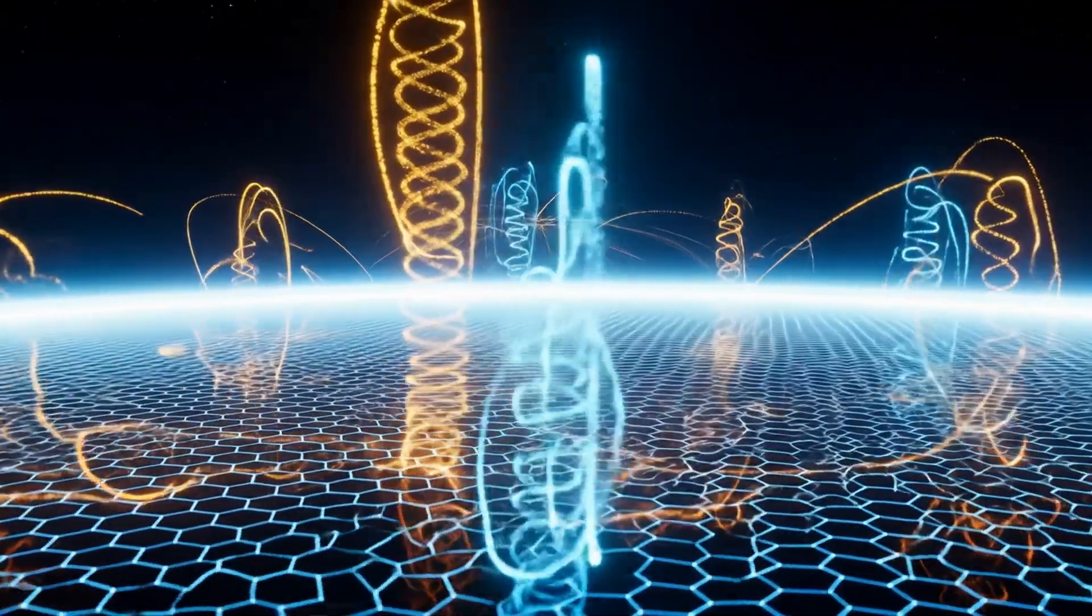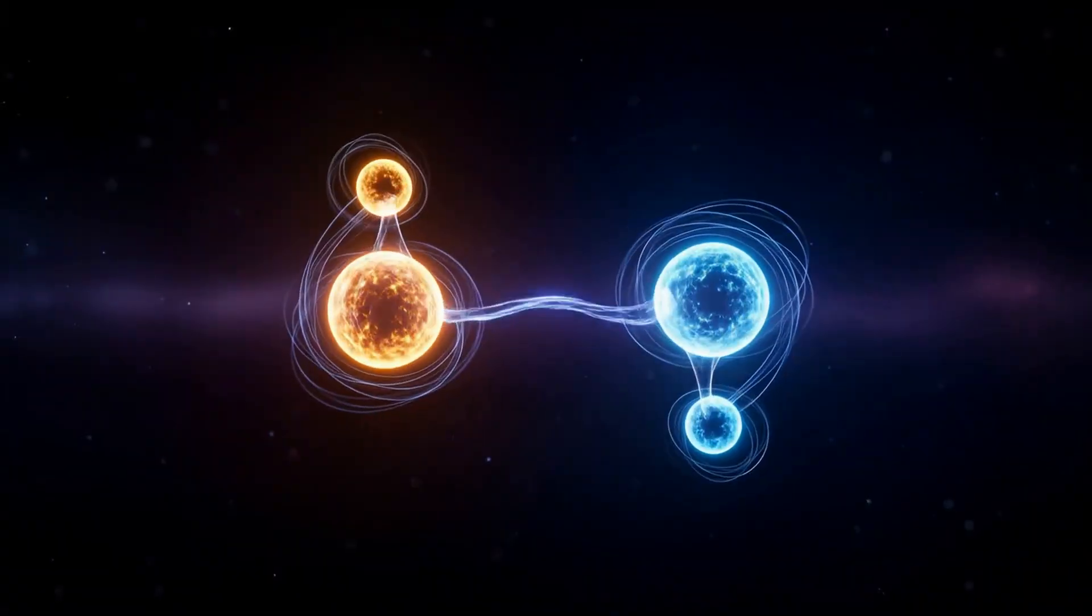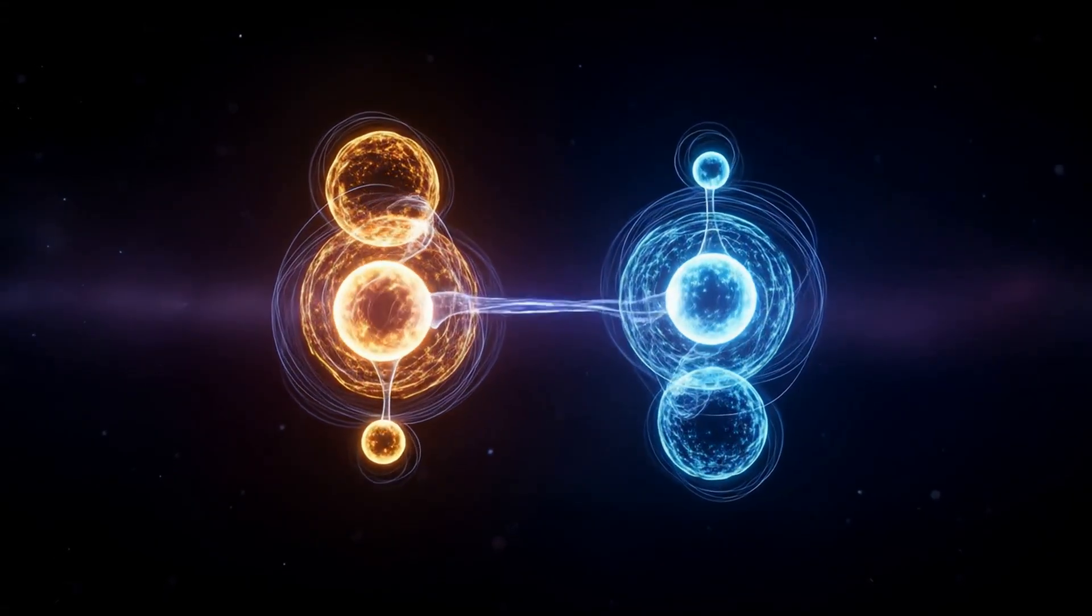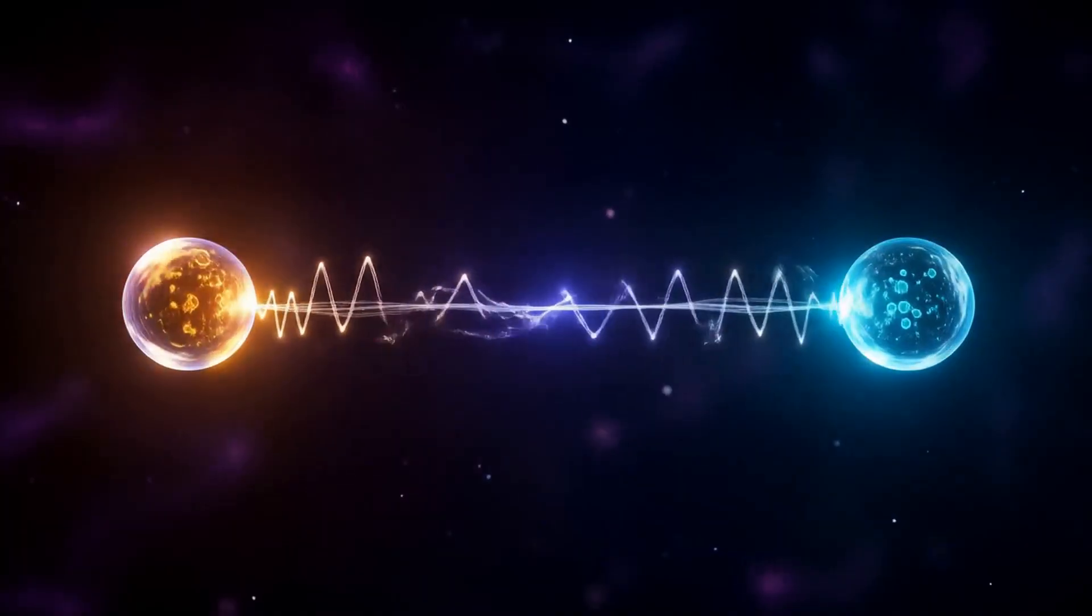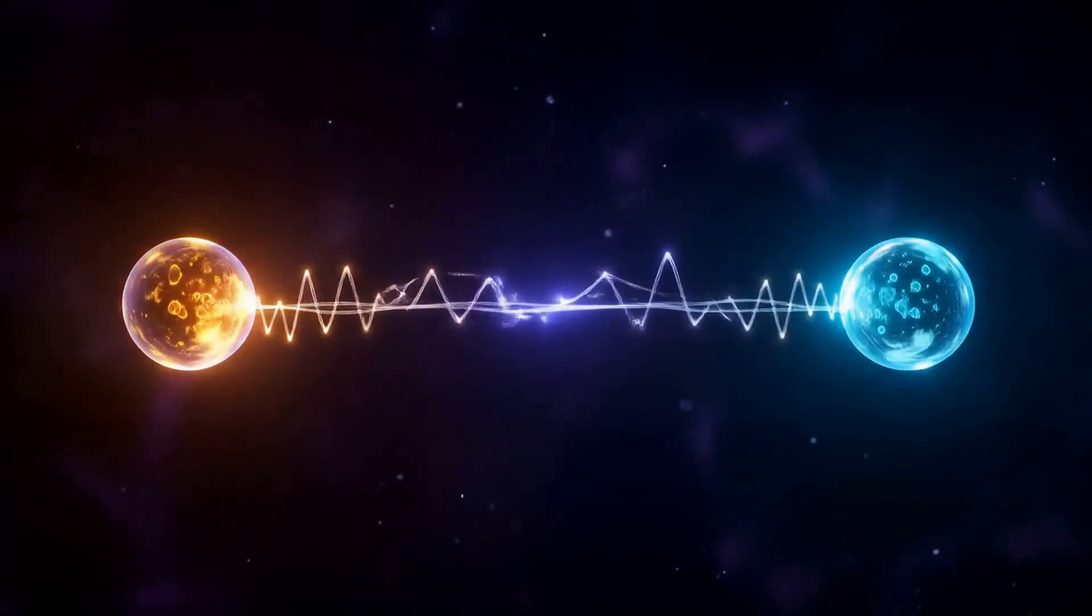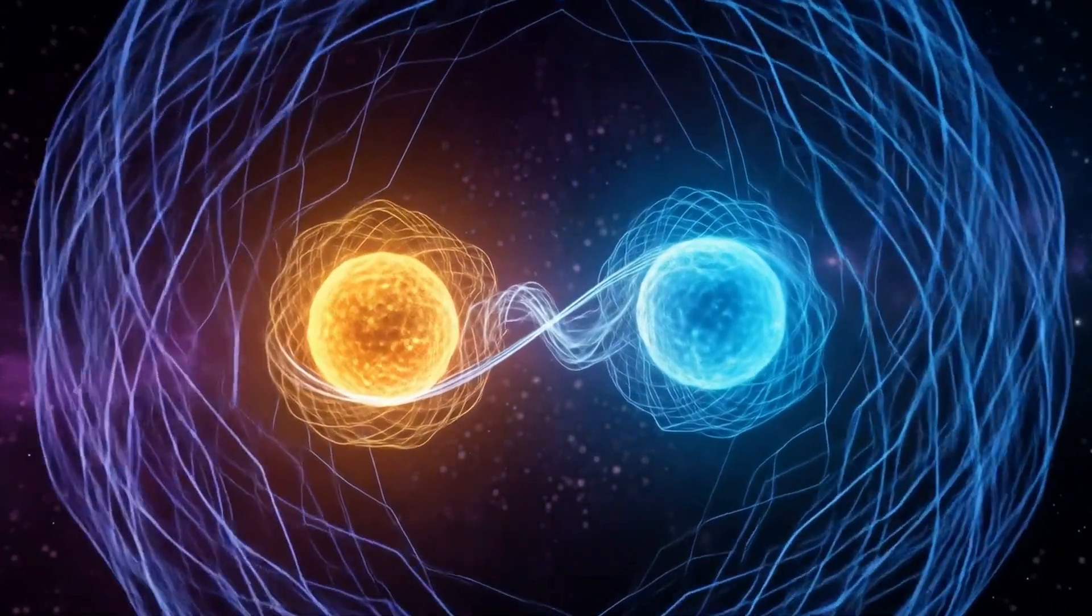Because they are entangled, they mirror one another perfectly. When one spins up, the other spins down. When one zigs, the other zags. Nothing travels between them. Their synchronization is instantaneous through the field of entanglement.